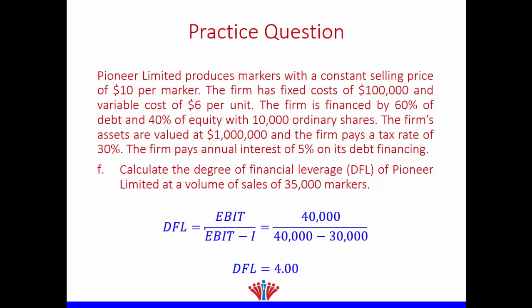For the degree of financial leverage (DFL) at 35,000 units using the single-quantity formula: DFL = EBIT ÷ (EBIT − Interest) = $40,000 ÷ ($40,000 − $30,000) = 4. The higher the degree of financial leverage, the higher the financial risk.